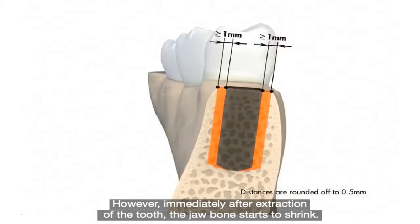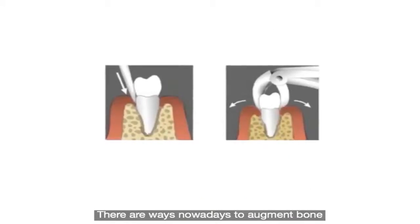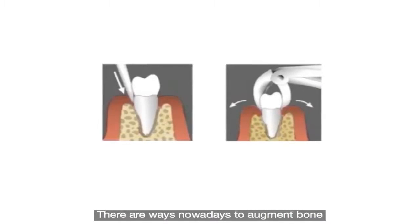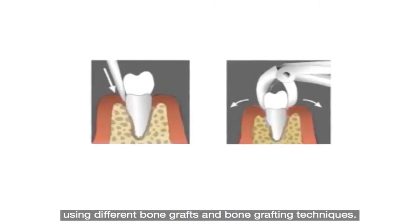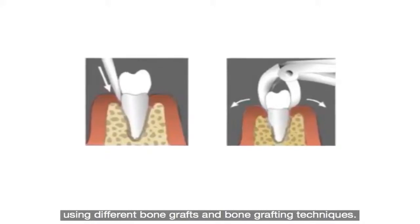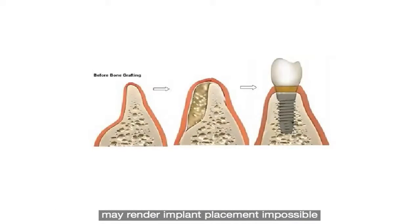However, immediately after extraction of a tooth, the jawbone starts to shrink. There are ways nowadays to augment bone using different bone grafts and bone grafting techniques. But there are anatomical, medical and technical limitations, and severe deficiencies in bone and/or gum tissue may render implant placement impossible or could result in a compromised aesthetic outcome.